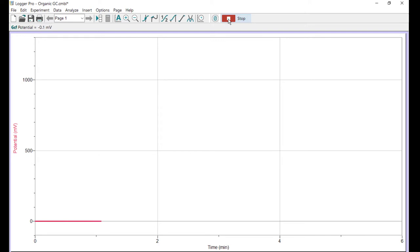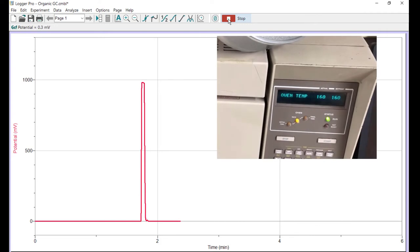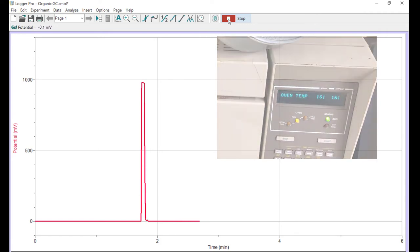Compounds elute off the column in order of their boiling points, with the lower boiling compounds eluding first and higher boiling compounds eluding later. So the first thing off the column is going to be the solvent, because that's the most volatile component. That would be acetone. We have a lot of acetone in this sample, so we'll see a large flat-topped peak. Here's a look at the temperature ramping on the GC. When you press Start on the GC, you started this temperature ramping program.